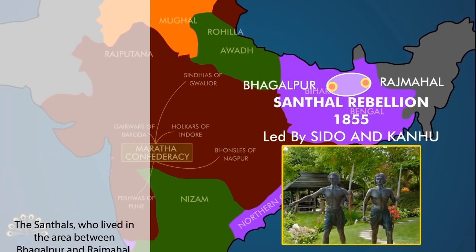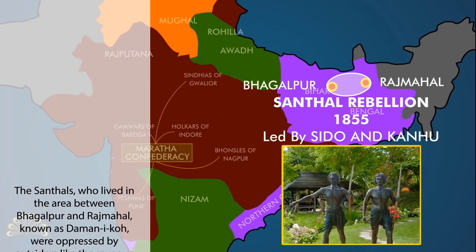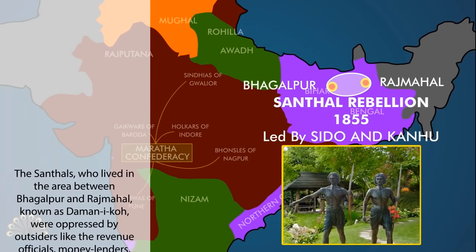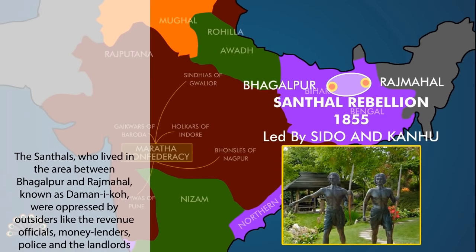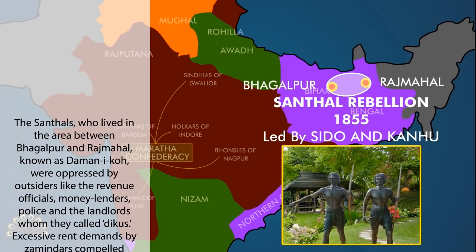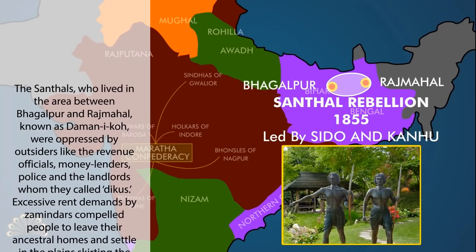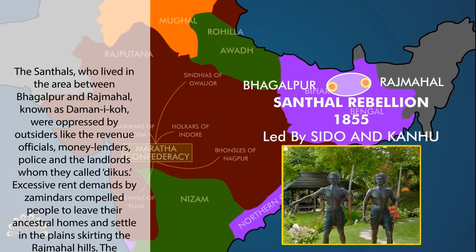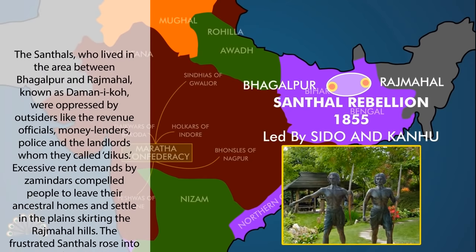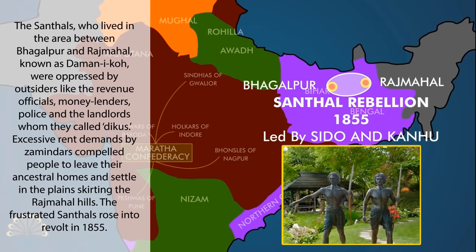The Sandhals, who lived in the area between Bhagalpur and Rajmahal known as Dhamnikko, were oppressed by outsiders like the revenue officials, money lenders, police and the landlords, whom they called Dikkus. Excessive rent demands by Zamindars compelled people to leave their ancestral homes and settle in the plains skirting the Rajmahal hills. The prostrated Sandhals rose into revolt in 1855.